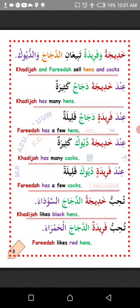Inda khadijata dajajun kathira — Khadija has many hens. Farida has a few hens. Inda khadijata diyukun kathira — Khadija has many cocks.